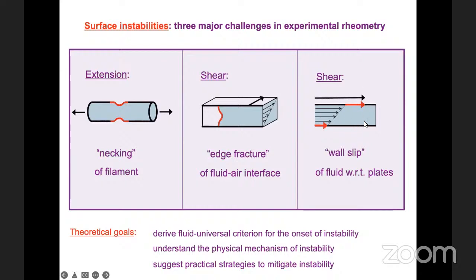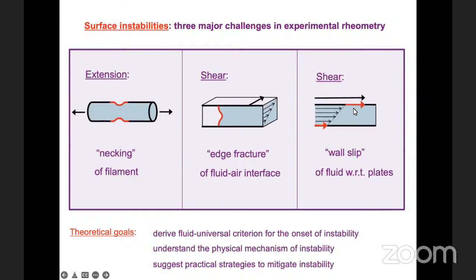Wall slip crops up very widely through the experimental rheology literature, whereas in theoretical rheology, theories just blithely assume things like no-slip conditions for the velocity and zero-gradient conditions for the microstructure — tensors like W or Q. It seems to me there's a whole field of theory to be opened up. Not nearly enough work has been done to understand what happens where a complex fluid meets the walls of the flow cell. The last instability I'll discuss today is this phenomenon of wall slip, where a sheared fluid sample makes contact with the hard walls of the flow device.